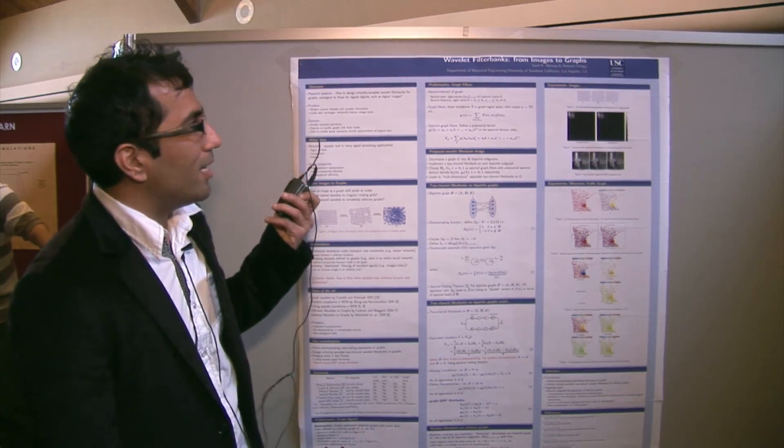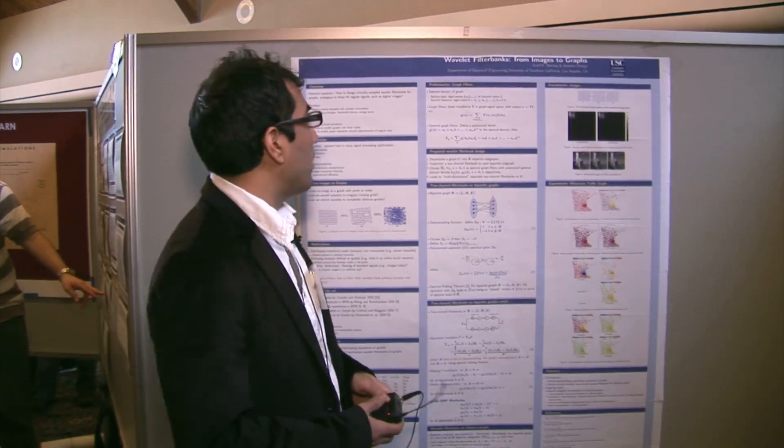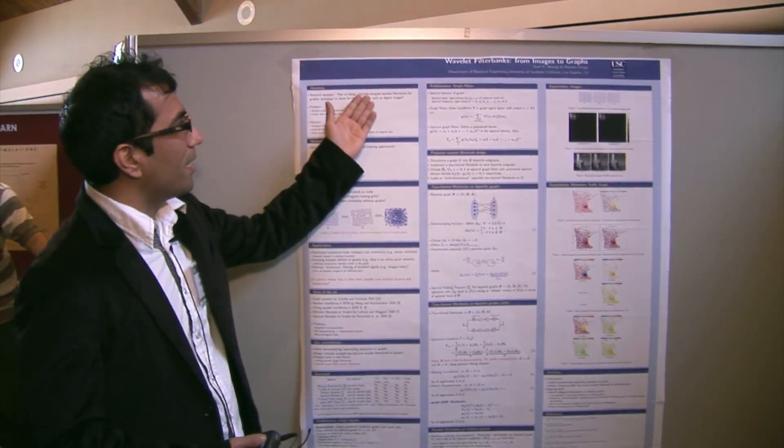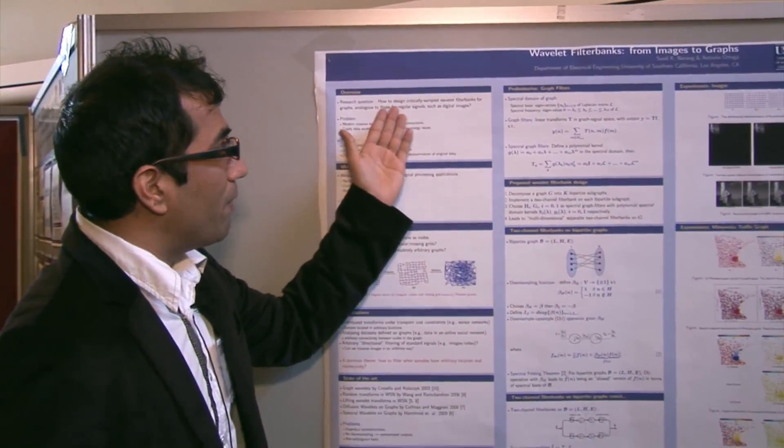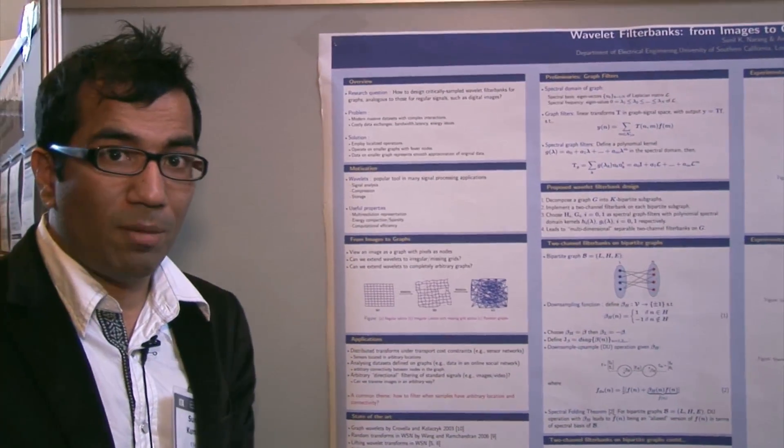I'm working on designing wavelet transform on graphs. My research problem is how to design critically sampled wavelet filter banks for graphs, such that they are analogous to the regular filter banks on regular signals, such as images.